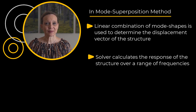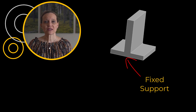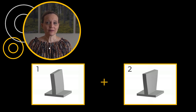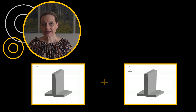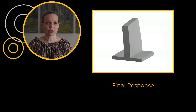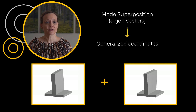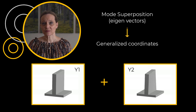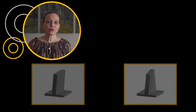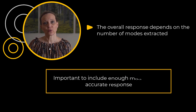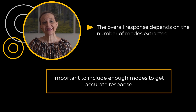Let us now see, on a simple example, how the mode superposition method works. From the modal analysis, where only a fixed support is used at the bottom of the structure, mode shapes 1 and 2 are extracted. The sum of mode shape 1 and mode shape 2 with their respective modal coordinates approximates the final response, which is the displacement vector. Mode superposition eigenvectors are known as generalized coordinates, and in this case, coefficients y1 and y2 are the degrees of freedom solved for. The overall response is dependent on the number of modes extracted from the modal analysis. It is important to include enough modes over the range of frequencies so we do not miss any prominent modes that can affect the overall response of a system and the accuracy of the solution.